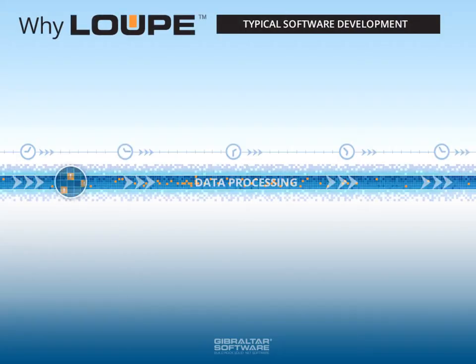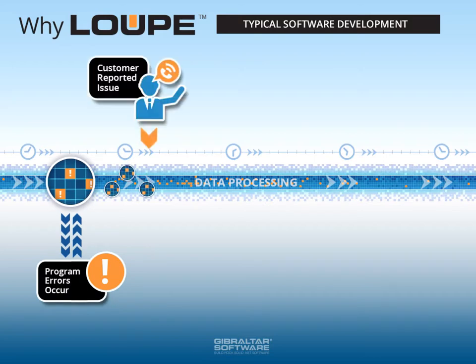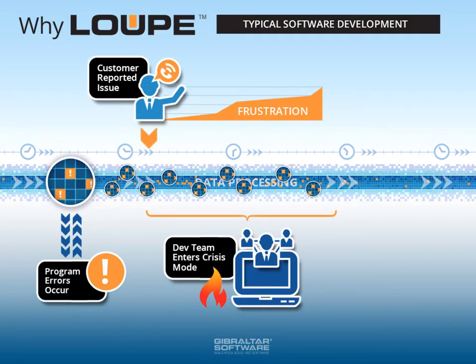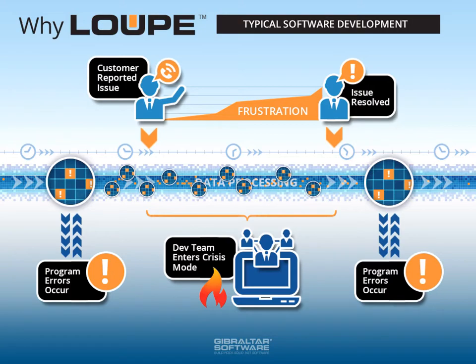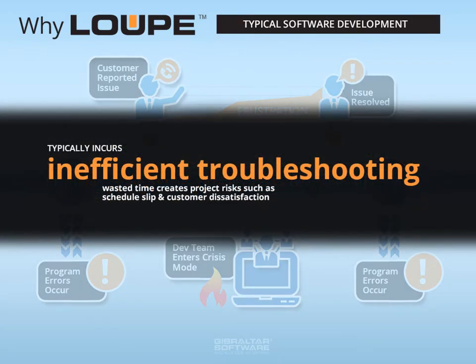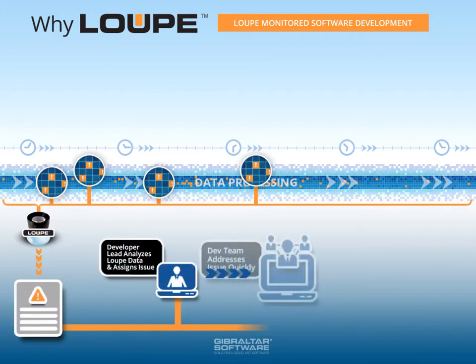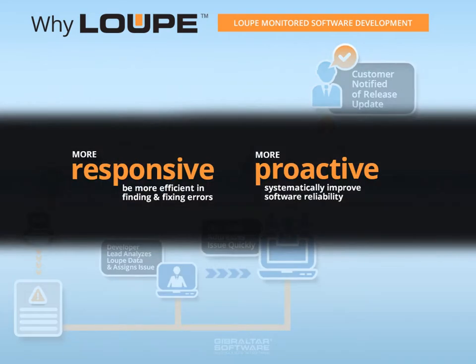The bottom line is that Loop reduces the risks of schedule slip and customer dissatisfaction that accompany inefficient hit-or-miss troubleshooting. Loop provides defense in depth to other software engineering best practices, making your team more responsive and proactive in building rock-solid software that delights your customers.